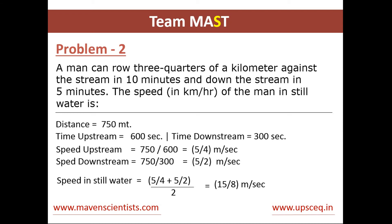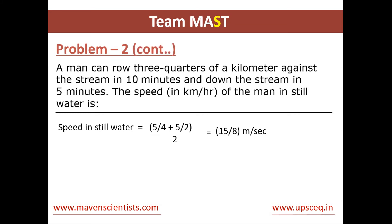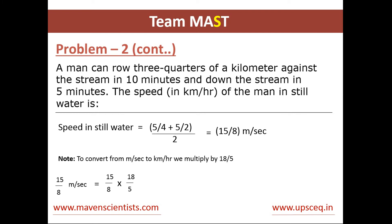We have the speed of the boat in still water in meters per second, but we need to convert it into kilometers per hour. To convert from meters per second to kilometers per hour, we multiply by 18/5. So, 15/8 multiplied by 18/5 gives us 54/8, or 6.75 kilometers per hour.